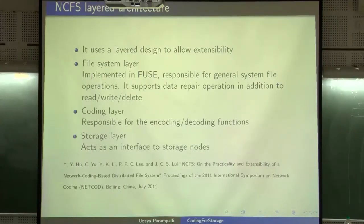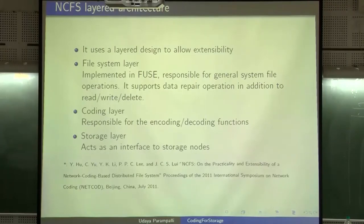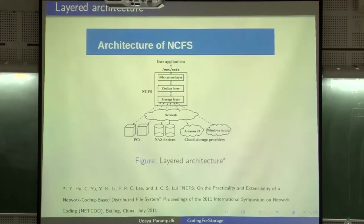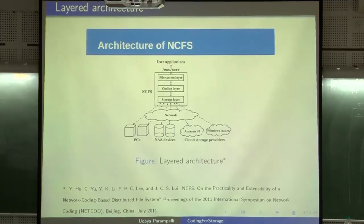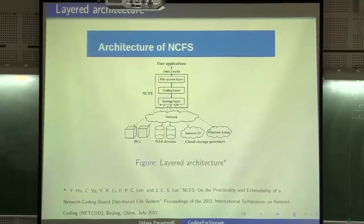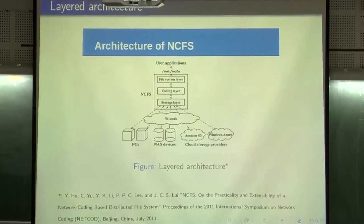NCFS uses a layered design to allow extensibility. It has three main aspects: the file system layer, implemented in FUSE, is responsible for general file operations and supports data repair operations including read, write, and delete. The coding layer has a separate module that takes care of encoding and decoding functions. The storage layer acts as an interface to storage nodes. User applications remain at the file system layer, and the storage layer supports multiple options including local storage and network-attached storage.